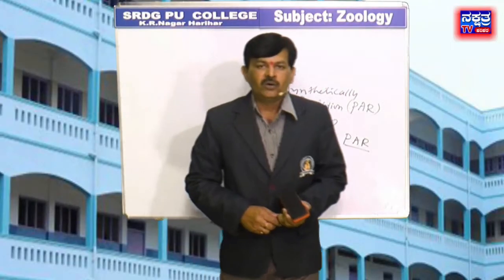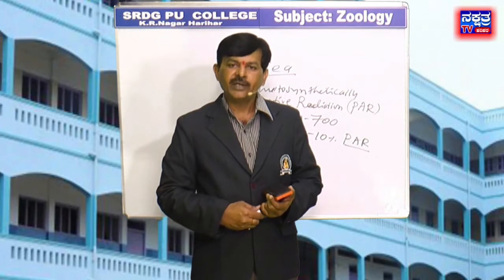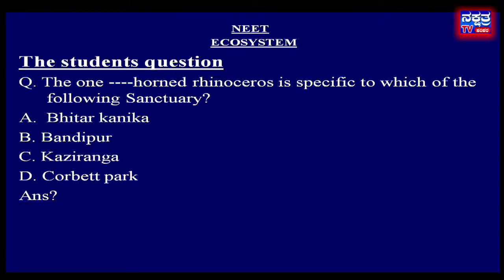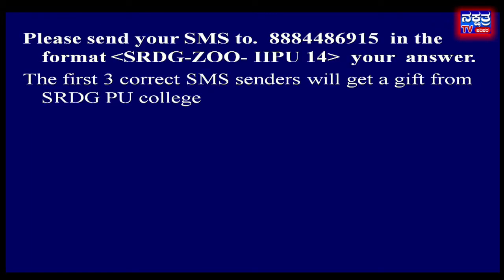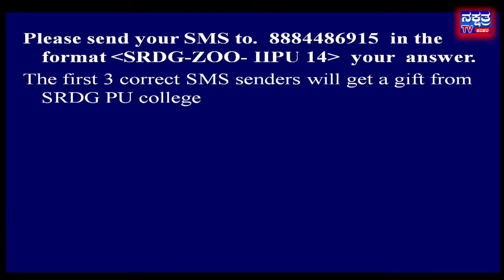Okay students, it is time to end this episode. I hope you have understood this chapter. At the end of every episode, we ask a question to the students. The question is: The one-horned rhinoceros is specific to which of the following sanctuaries? Option A: Vitar Kanika, B: Bandipur, C: Kaziranga, D: Corbett National Park. Please send your SMS to 388-244-86915 in the format SRDC-ZOO-2NDPU14, and type your answer A, B, C, or D. The first three correct SMS senders will get a gift from SRDC PU College.